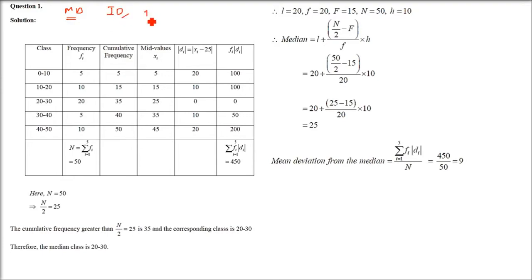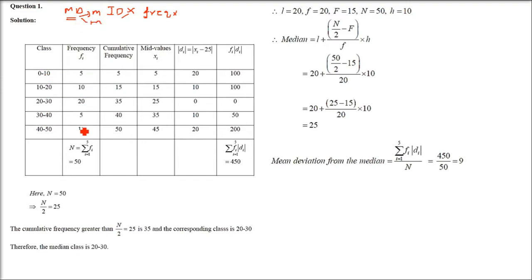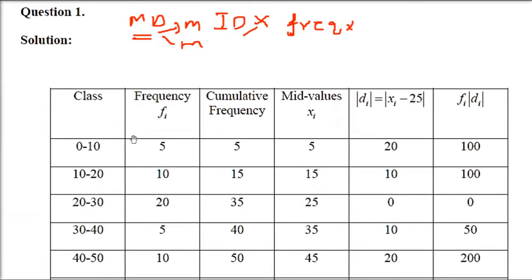In a grouped distribution, we don't have individual data or frequency with Xi directly; instead we have frequency with class intervals. So we have to find mean deviation around both the mean and the median. You will have classes and frequencies, and to get the final mean deviation you must find either the median or the mean first.